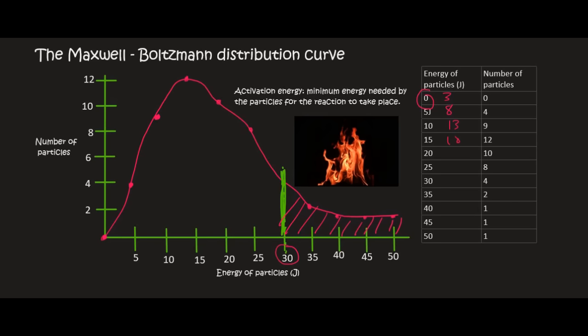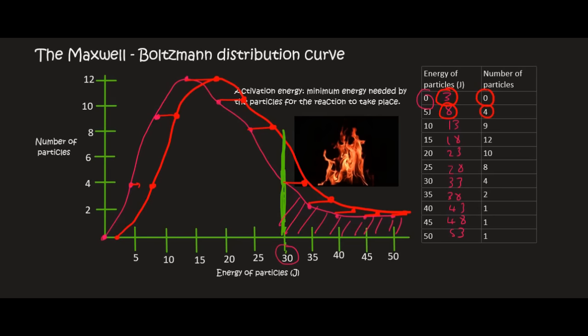Now we need to analyze what that will do to the shape of our graph. At energy 3, there will be 0 particles, so this point will simply move over there. This point, which originally had 4 particles, they're now going to have an energy of 8, so this needs to move up to about there. Each of these points is going to slide to the right, and the new graph — the one in red — shifts slightly to the right. The number of particles that can now react is everything to the right of the activation energy. By increasing the temperature, we increase the energy of the molecules, so more of them get pushed over the activation boundary.